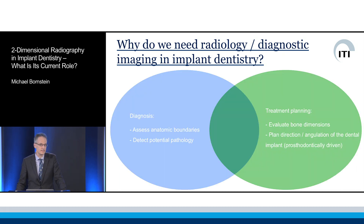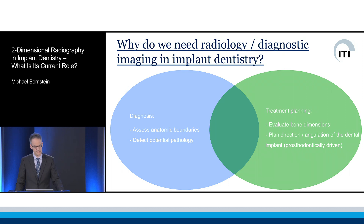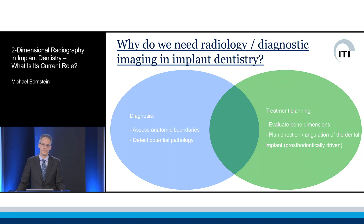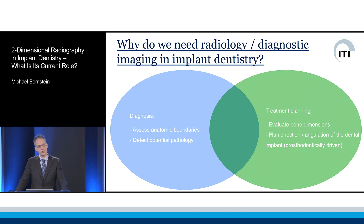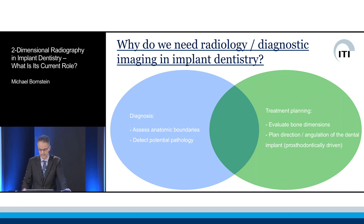Summarizing this with this graph here: on one hand, we have the diagnosis to assess anatomic boundaries and to detect potential pathology. And on the other hand, we have treatment planning — to evaluate bone dimensions and then also plan specifically the angulation, the width, the length of the implant — to establish prosthodontically driven implant treatment and also then placement.